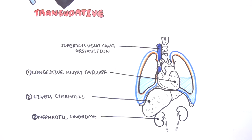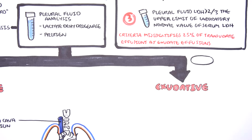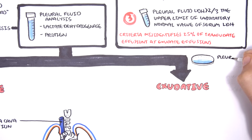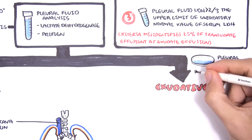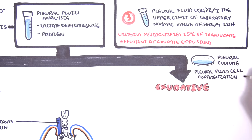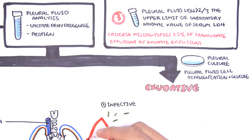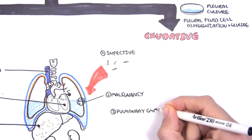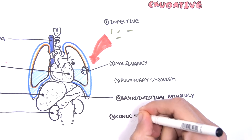Exudative pleural effusions really means that there is a lot of LDH and/or a lot of proteins in the pleural fluid in comparison to the serum levels. If exudative pleural effusion is suspected and you want to diagnose a potential cause, other tests you can order include pleural fluid microscopy culture sensitivity, pleural fluid cell differentiation, and pleural fluid glucose levels. Some of the more common causes of exudative pleural effusions include infections, malignancy, pulmonary embolism, gastrointestinal pathologies such as pancreatitis, and connective tissue diseases.